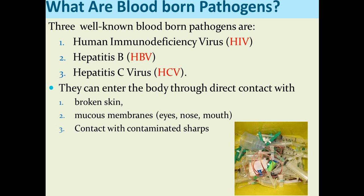How can they enter the body? They can enter the body through direct contact with either broken skin — by abrasion, laceration, or cutting wound. Or through the mucous membrane of the eyes, nose, or mouth. Or through contact with contaminated sharps, which means a sharp object such as a knife or needle. These are the main routes of entry of this pathogen to the body.